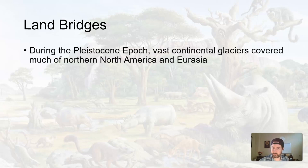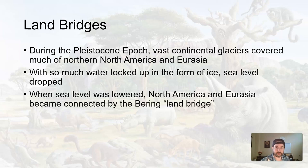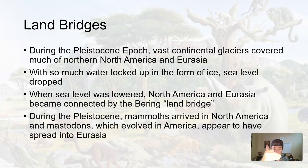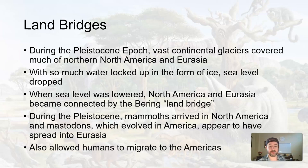Getting back to land bridges — during the Pleistocene, because of those vast continental glaciers, a lot of oceanic water got locked up as ice, so sea levels dropped. When that happened, the Bering land bridge was formed, so organisms could move back and forth between Asia and North America. That's how woolly mammoths arrived in North America, and mastodons, which evolved in America, spread to Eurasia. This land bridge also helped humans migrate to the Americas, as human life first evolved out of Africa.